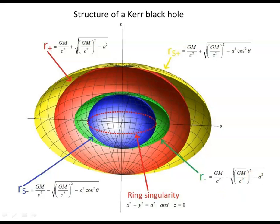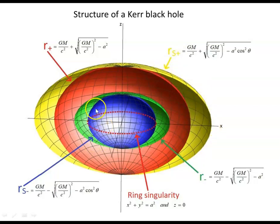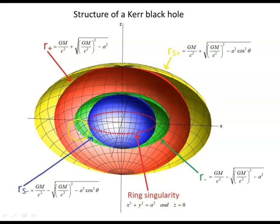In previous videos we looked at the structure of the Kerr black hole. The yellow surface is the outer stationary limit surface, the blue one is the inner stationary limit surface, the red dotted thing is the ring singularity, the green surface is the inner event horizon, and the red surface is the outer event horizon.